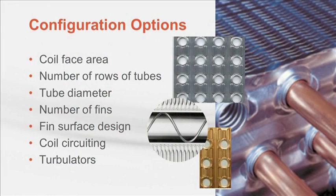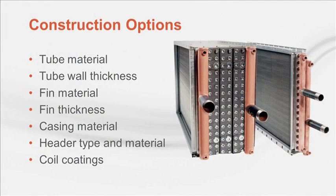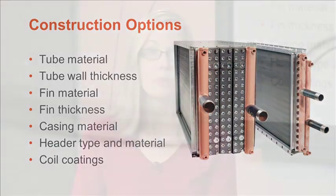The primary characteristics of HVAC water coils include the face area of the coil, the number of rows and diameter of the tubes, the number of fins and the design of the fin surfaces, the length of each circuit and the number of tubes fed, and whether or not the tubes contain turbulators. Construction options also include materials and thickness of tubes, fins, and casing, the types of headers used, and coil surface coatings. All of these options help project teams select the optimal coil design for a given project.